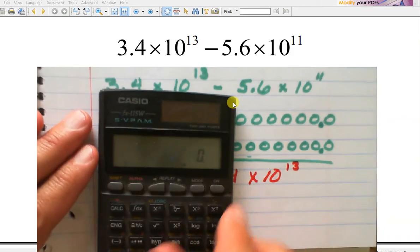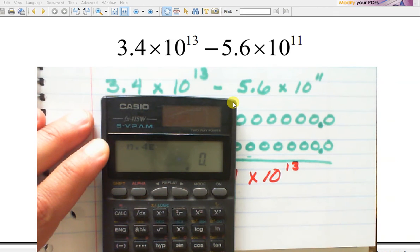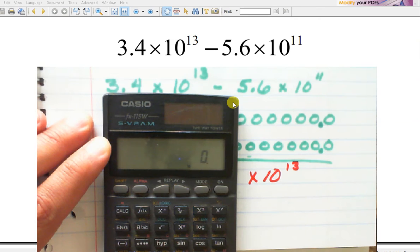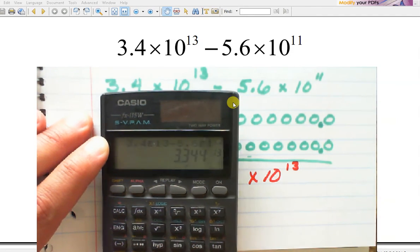Here's how I would have done it on the calculator. Just straight up on the calculator. 3.4 scientific notation 13, minus 5.6 scientific notation 11. So 3.344 times 10 to the 13th.